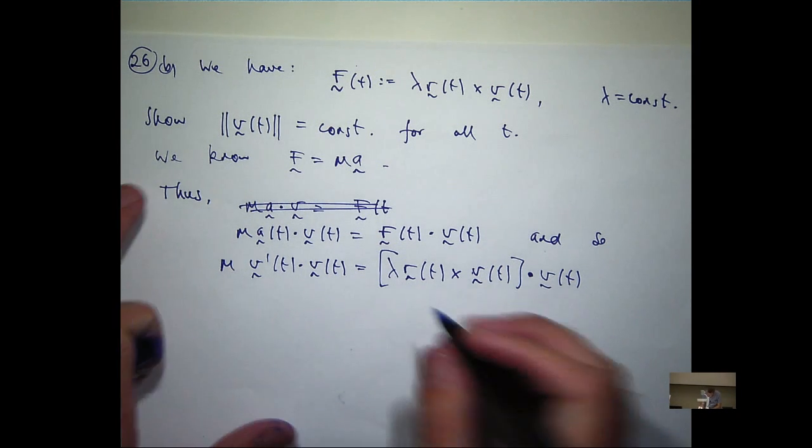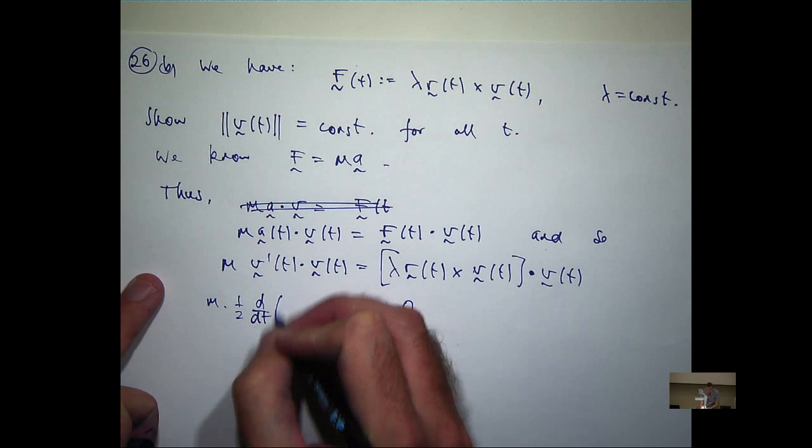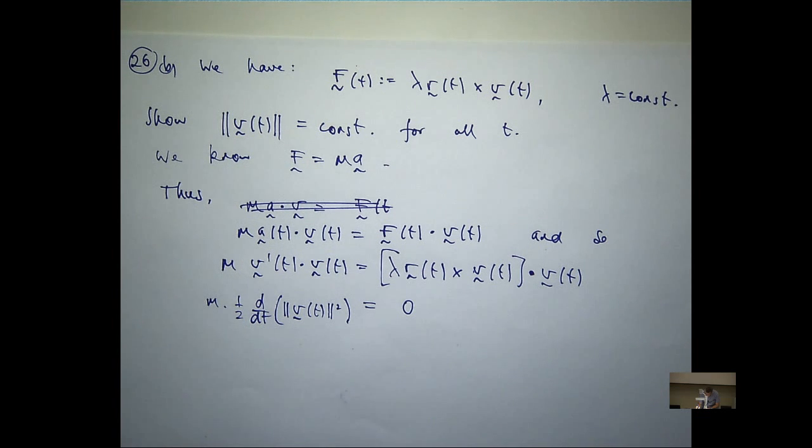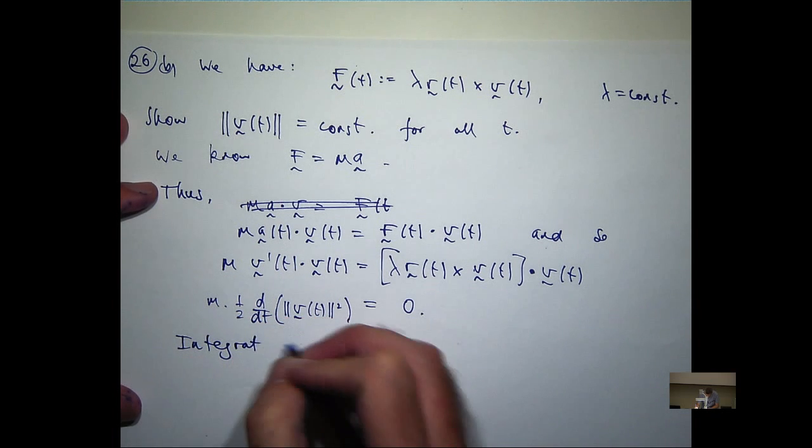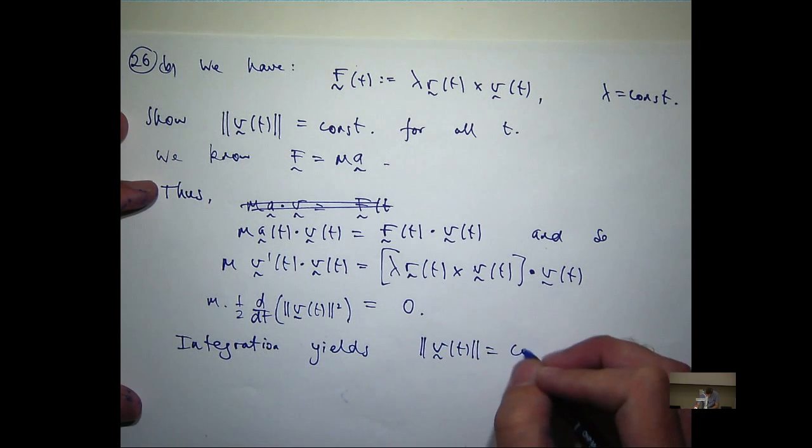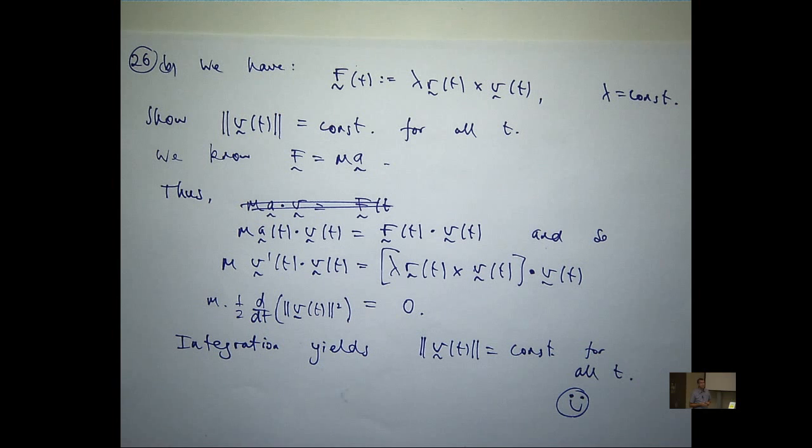So the right-hand side's zero and the left-hand side is just m times a half. Yep, you guessed it. So what do we know? We integrate, we'll get a constant so that its speed has got to equal a constant. Not bad, huh? Not too bad. So that's three examples where this little derivative has popped up.